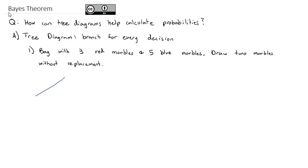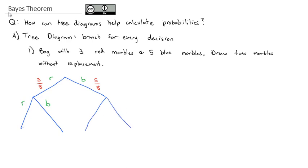First, I go in and grab my first marble. The first marble could be either red or blue. The probability that it's red is drawn on the red branch — there are three out of eight red marbles. The probability that it's blue is written on the blue branch — there are five out of eight blue marbles. Then a second draw happens: coming off the red branch, I could draw red again or blue. Coming off the blue branch, after blue I could draw red or blue again.